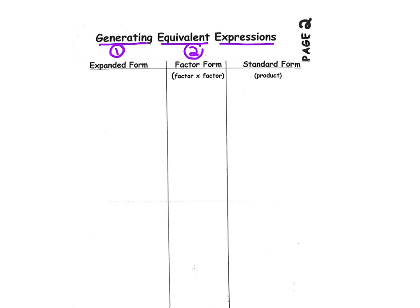We have three types of forms that we're going to use. Number one, expanded form. Number two, factor form — and remember that a factor times a factor gives you a product. Number three, the product, which is known as standard form. We'll be working with these three types of forms and representing expressions.